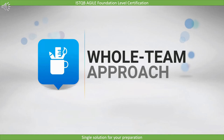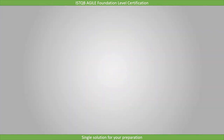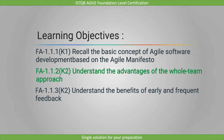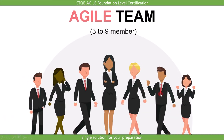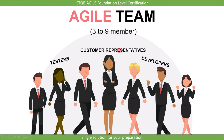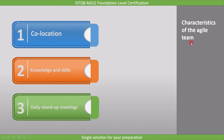In this lecture we will cover the whole team approach. The learning objective is to understand the advantages of the whole team approach, marked as K2. Let's first see how an agile team is formed. In an agile team we usually have three to nine people, which includes tester, developer, and customer representatives. In an agile team, we consider the customer representative as part of the agile team.